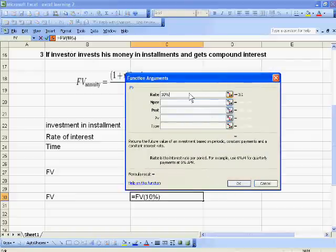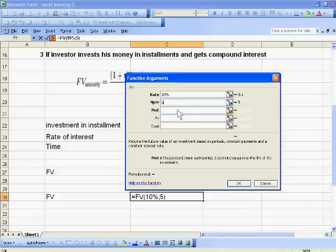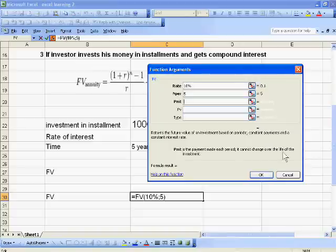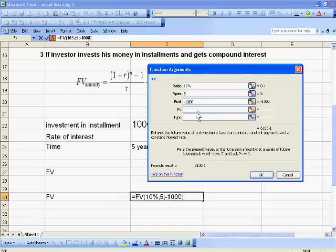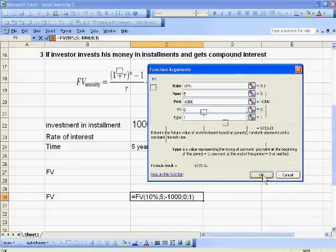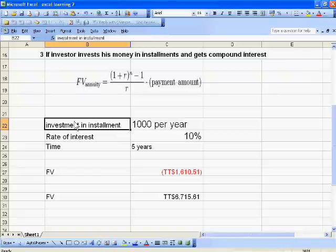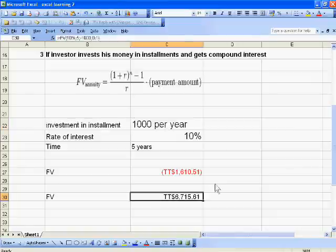Now PMT is the payment made each period, it cannot change over the life of the investment. This is minus 1000. This is not a fixed present value, so this is zero. Type is 1. If every year investor invests 1000 per year for five years, he will get 6715.61.